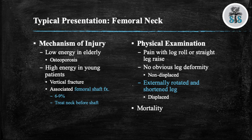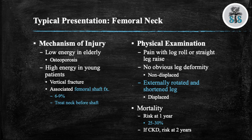Classically patients with a displaced femoral neck fracture will have their leg externally rotated and shortened. The one-year mortality rate for someone who sustains a femoral neck fracture is approximately 25 to 30 percent. The two-year mortality rate with someone with chronic renal failure is approximately 45 percent. It is important to educate families about the high mortality rate and that these are not benign type injuries.